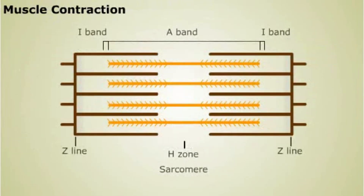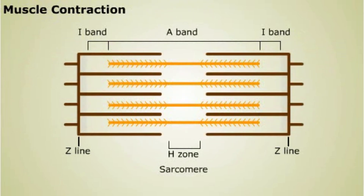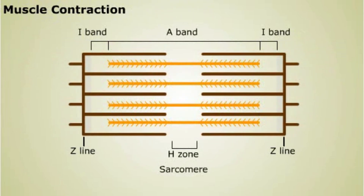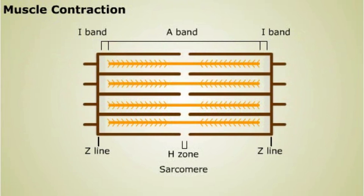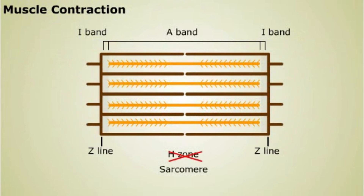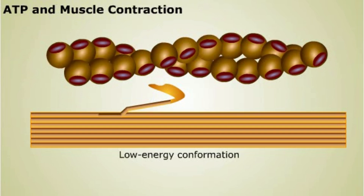When a muscle fiber contracts, its sarcomeres contract and the distance between the Z lines decreases. The lengths of the individual filaments stay the same, but they slide past each other. The sliding of the filaments requires energy in the form of ATP.